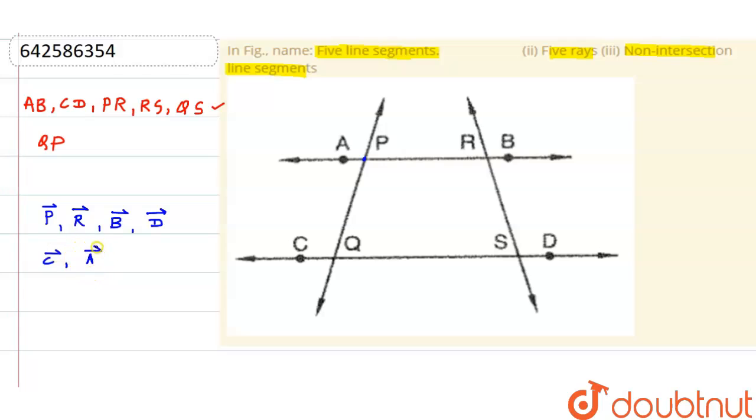So there are these five rays we have. Now talk about the non-intersection line segments. You can see AB and CD, these are parallel to each other. That means they cannot intersect with each other anyhow.